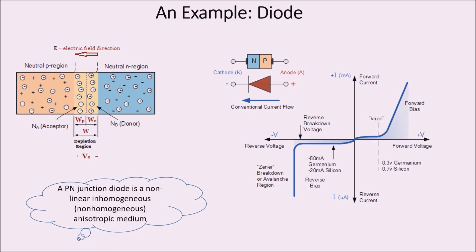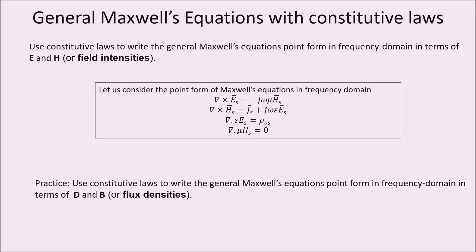Now we rewrite the general Maxwell's equation with constitutive law by replacing B with mu*H and D with epsilon*E. In the first equation, replace B with mu*H; in the second, replace D with epsilon*E; in the third, replace D with epsilon*E; and in the fourth, replace B with mu*H. We can also rewrite Maxwell's equation in terms of D and B, in which case replace E with D/epsilon and H with B/mu.